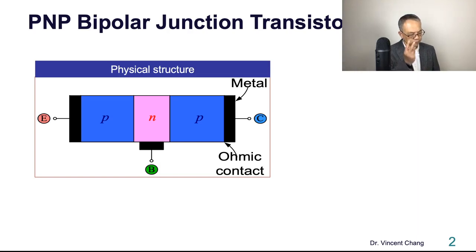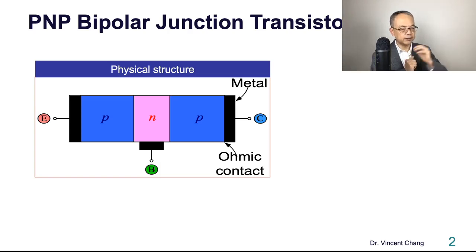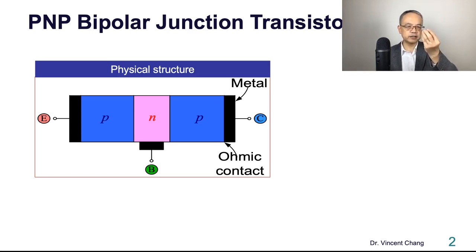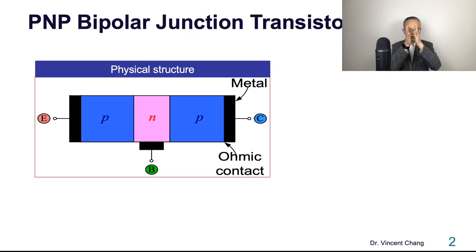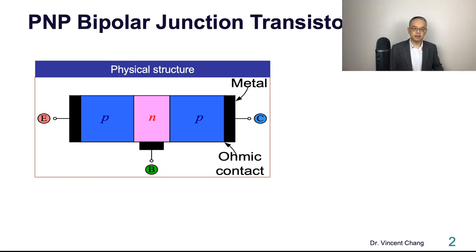There are two types of characteristics for metal semiconductor junctions. The first is the rectifying type — forward bias, reverse bias — called Schottky contact. The second is the non-rectifying type, meaning there's no rectifying effect, no forward bias or reverse bias distinction. Its nature is very similar to a resistance, following Ohm's law. This non-rectifying metal semiconductor contact is called ohmic contact.